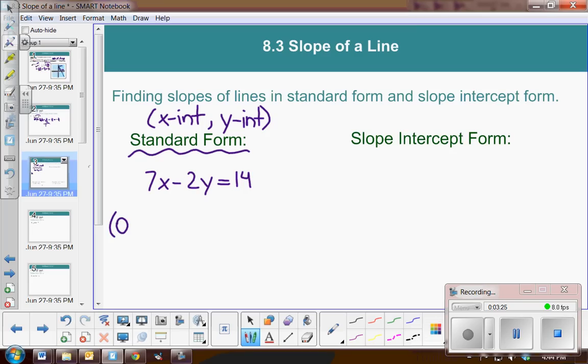So let's say we let x be 0. And if x is 0, then we know negative 2 times negative 7 is 14. So this would give us the y-intercept. And to find the x-intercept, we want to find the x value when y is 0. So if y is 0, 7 times 2 is 14.